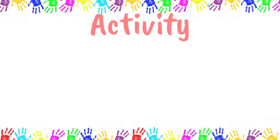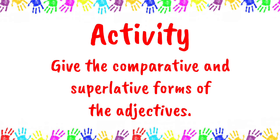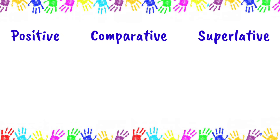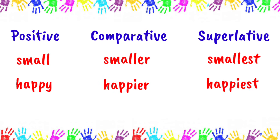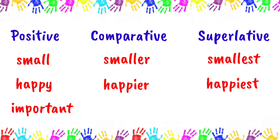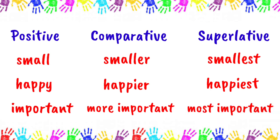Now let us have another activity. Give the comparative and superlative forms of each of the following adjectives. Small: smaller, smallest. Happy: happier, happiest. Take note that we changed Y to I before adding ER and EST. Important: more important, most important. We used 'more' and 'most' because the word has three syllables.